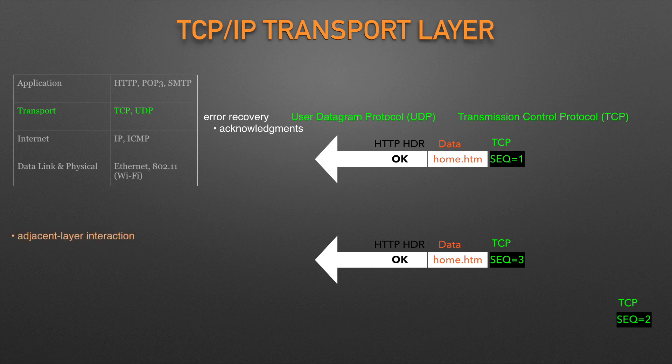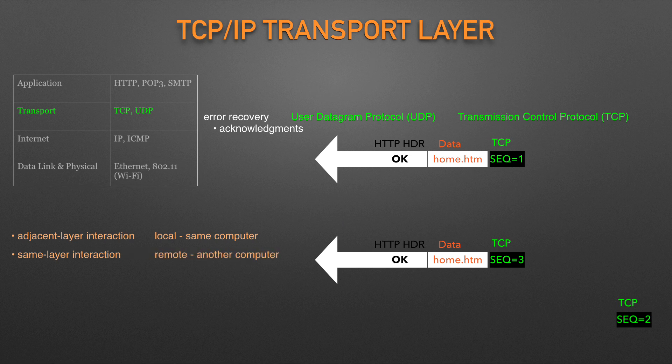Adjacent layer interaction refers to the concepts of how adjacent layers in a networking model, on the same computer, work together. HTTP wants error recovery, so it uses the next lower layer protocol, TCP, to perform the service of error recovery. Same-layer interaction occurs when a particular layer on one computer wants to communicate with the same layer on another computer — the two computers use headers to hold the information they want to communicate.